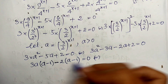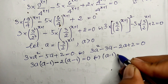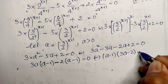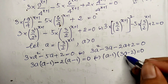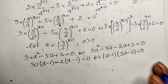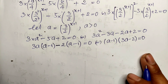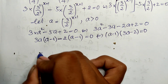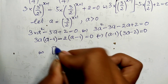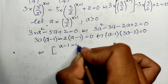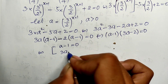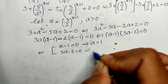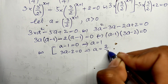We factor this: 3a squared minus 5a plus 2 equals 0 can be written as (a minus 1)(3a minus 2) equals 0. Since two factors equal 0, we set each factor equal to 0: a minus 1 equals 0 gives a equals 1, and 3a minus 2 equals 0 gives a equals 2 divided by 3.